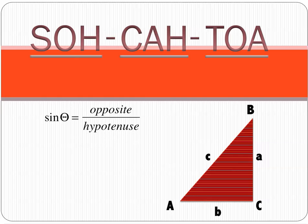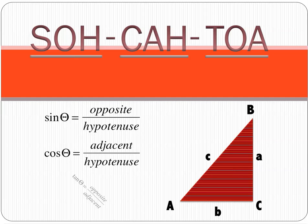SOH is to remind us that sine of an angle is equal to the opposite divided by the hypotenuse. CAH stands for cosine equals adjacent over the hypotenuse, and the TOA is tangent is equal to the opposite over the adjacent.